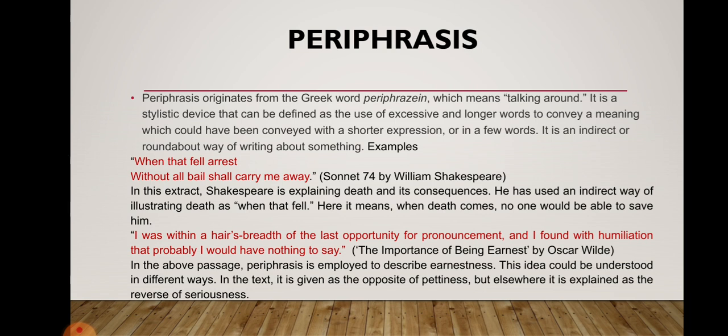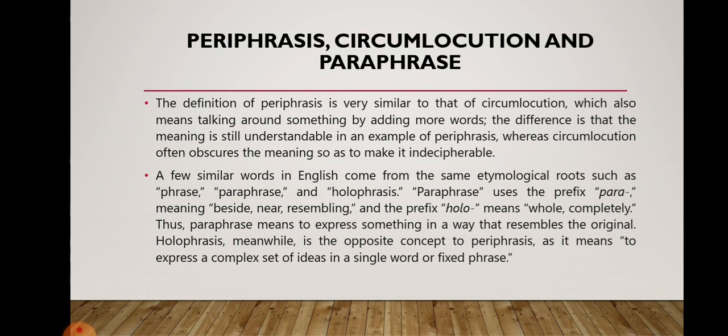Another example is from The Importance of Being Earnest by Oscar Wilde: 'I was within a hair's breadth of the last opportunity for pronouncement, and I found with humiliation that probably I would have nothing to say.' In this passage, periphrasis is employed to describe earnestness — an idea understood in different ways in the text. The definition of periphrasis is very similar to circumlocution, which also means 'talking around' by adding more words. The difference is that the meaning remains understandable in periphrasis, whereas circumlocution often obscures the meaning so as to make it indecipherable.